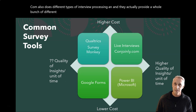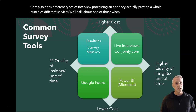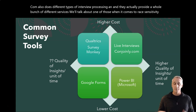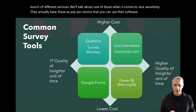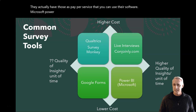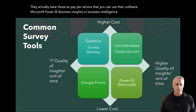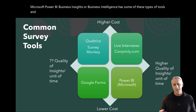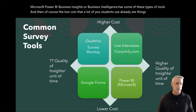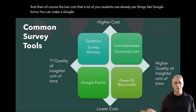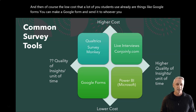We'll talk about one of those. When it comes to price sensitivity, Conjointly actually has pay-per-service options that you can use with their software. Microsoft Power BI — Business Intelligence — has some of these types of tools as well. And then of course the low-cost option that a lot of students use already is Google Forms. You can make a Google Form and send it to whoever you want and share that, which is very low cost.